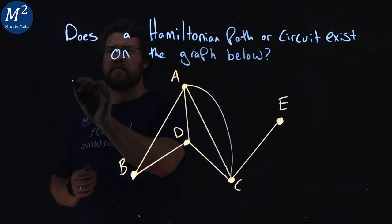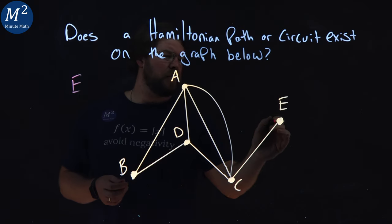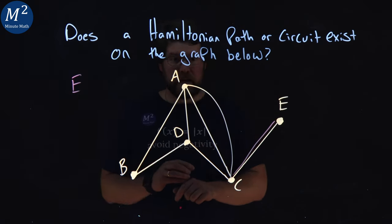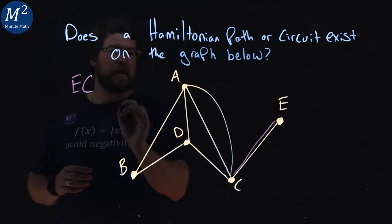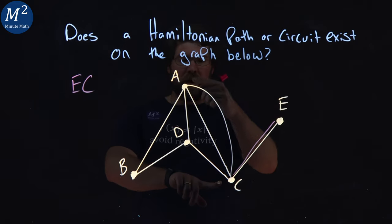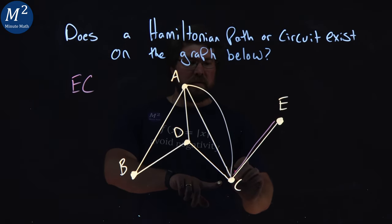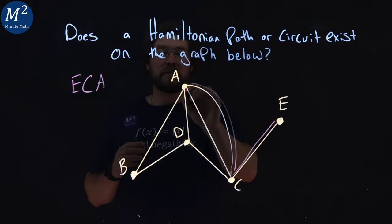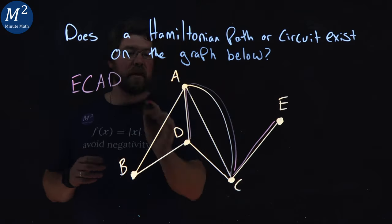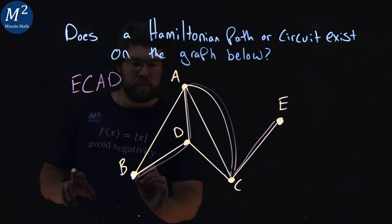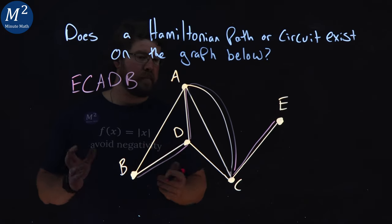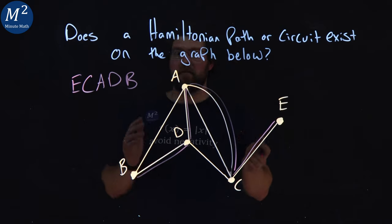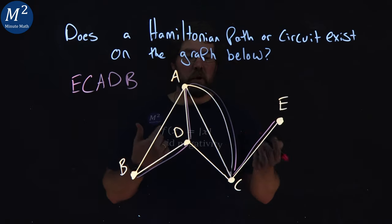Let's start at E and let's go see if we hit every single vertex. So I've got E to C. Then let's go around this path to A, up here. Then let's go to D, right here. Then we go to B. And right off the bat, now I have hit every single vertex only once.